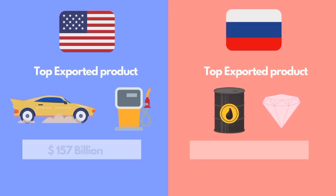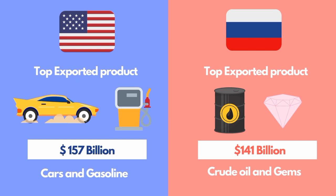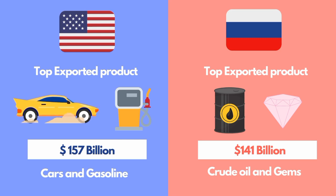The top exported products of the US are cars and gasoline, with a value of 157 billion dollars. The top exported products of Russia are crude oil and gems, with a value of 141 billion dollars.